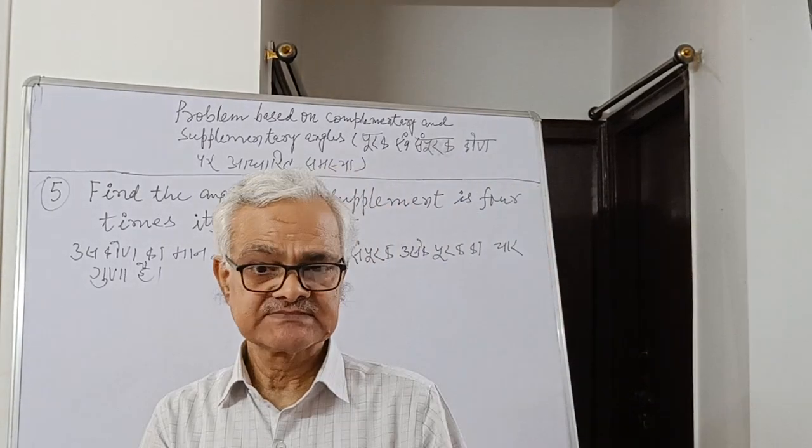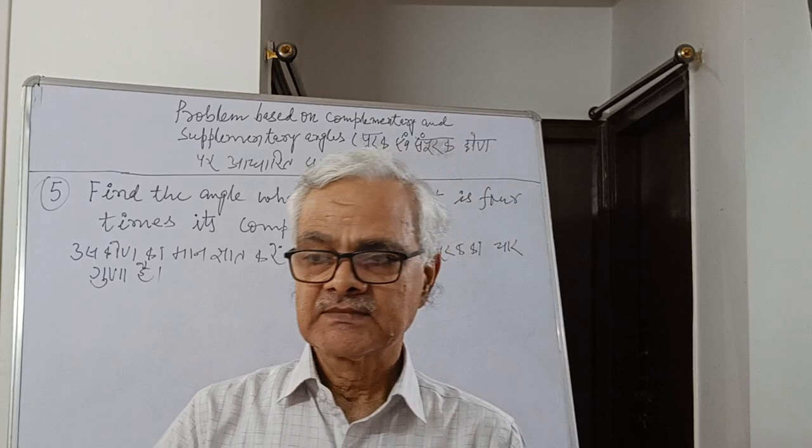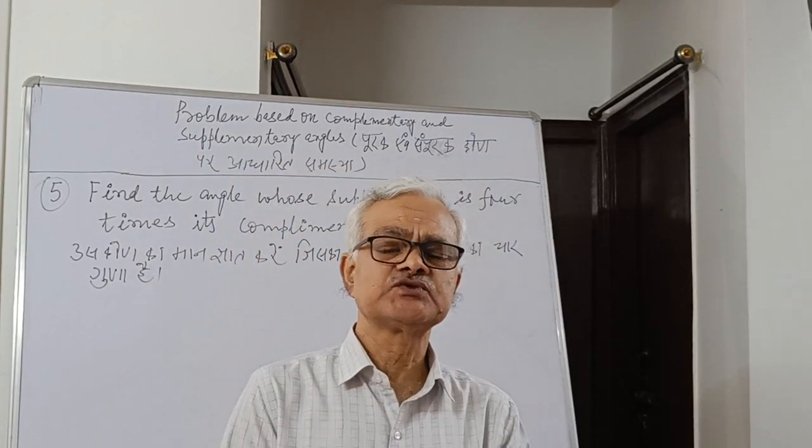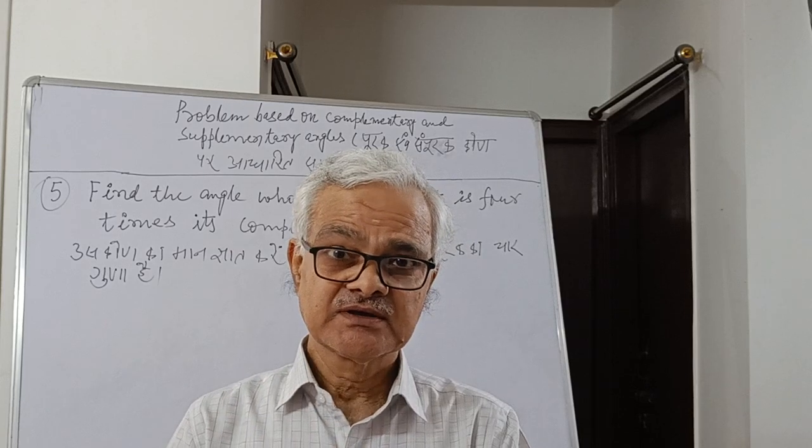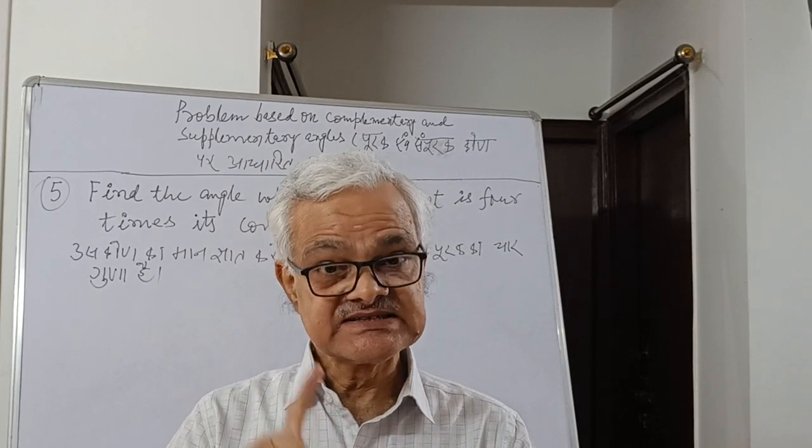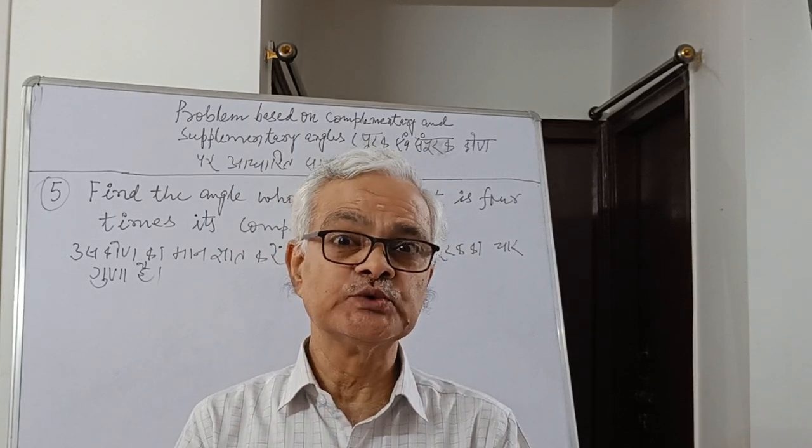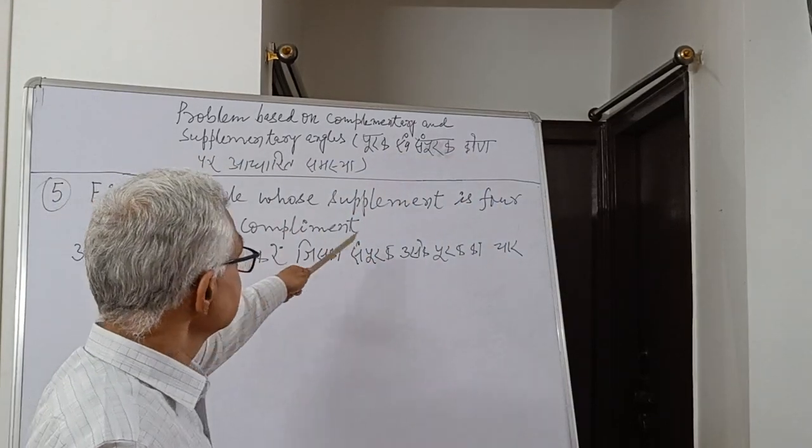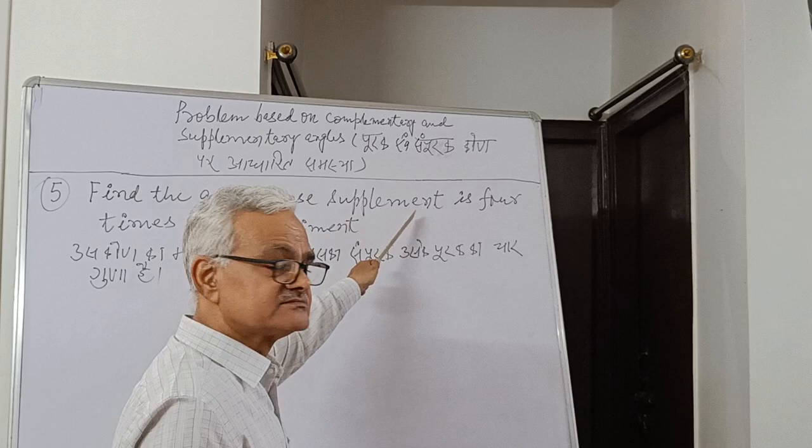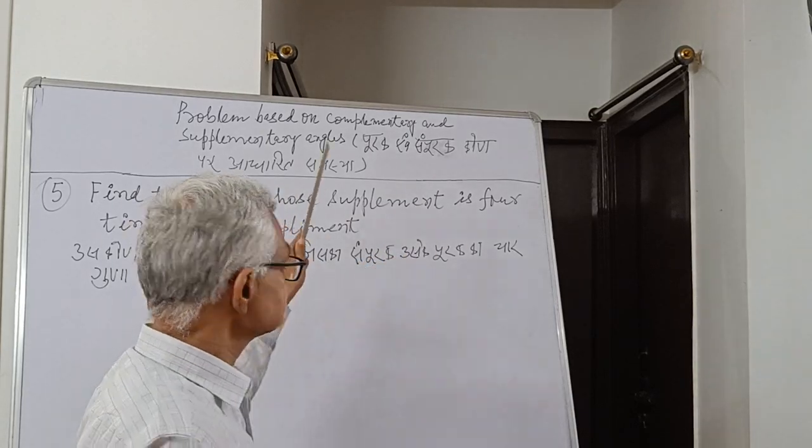As you can see, in this problem both concepts are together - complement and supplement. The problem is to find the angle where the supplement is four times its complement.